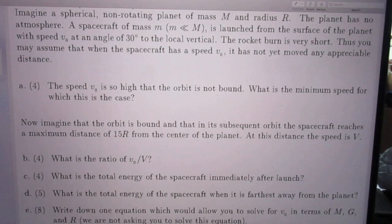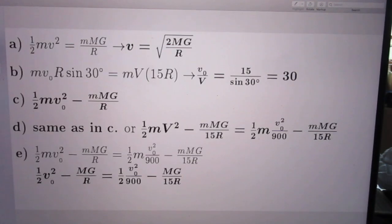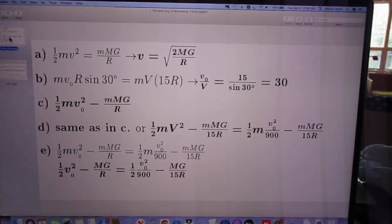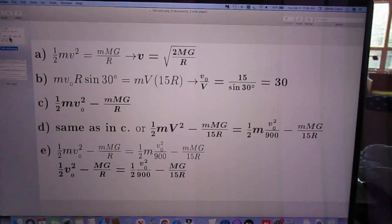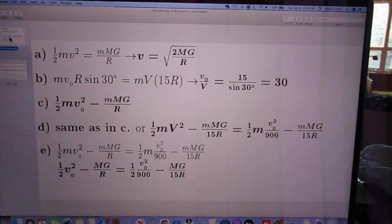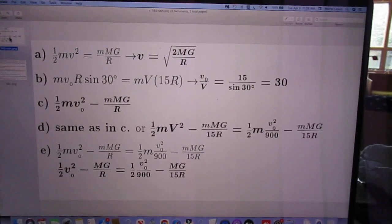Next question. What is the total energy of the spacecraft immediately after launch? So the total energy is the sum of kinetic energy and the gravitational potential energy, which is negative. And so this is the total energy when the spacecraft leaves the Earth.